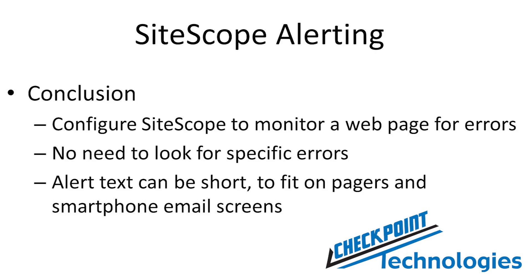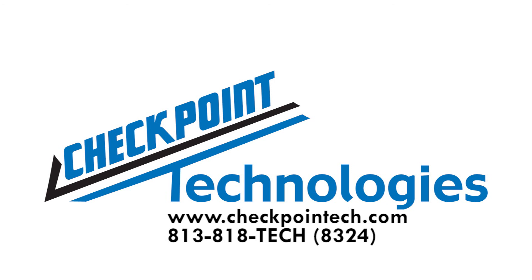In conclusion, you can configure SiteScope to look for specific error codes. But in the case today, we're going to have it look for a general error condition and send just the contents of the URL to a pager or an email. If you have any questions about SiteScope or any of the other testing or quality products that Checkpoint Technologies offers, please give us a call at area code 813-818-8324. Thanks.